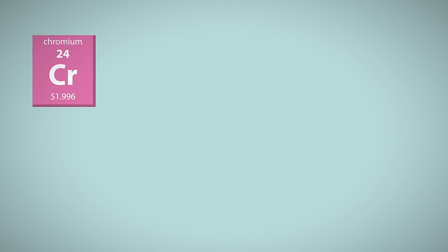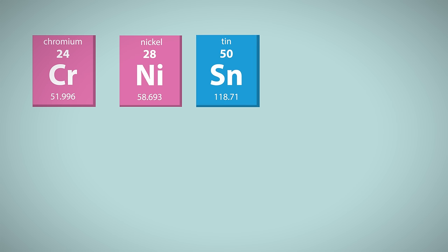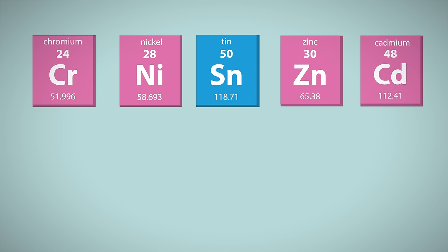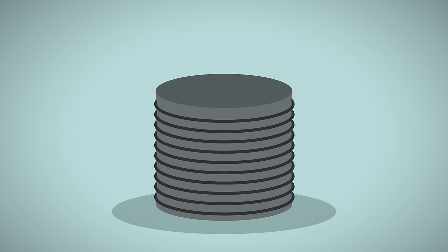Chromium, commonly known as chrome, nickel, tin, zinc, and cadmium are often used to plate copper, iron, and steel objects. Tin cans are actually made of steel but have a thin tin coating.